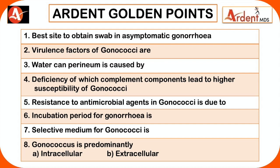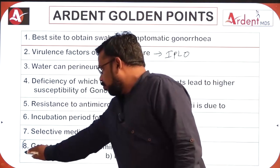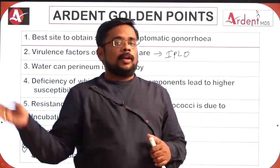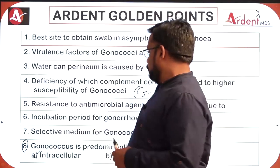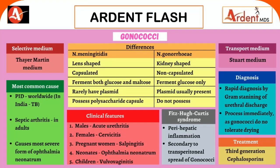Resistance to antimicrobial agents in gonococci is due to both plasmid and chromosomal mediated mechanisms. The incubation period for gonorrhea is two to seven days. The selective medium is Thayer-Martin medium. Gonococci is predominantly an intracellular organism, though also present extracellularly. Meningococci is predominantly extracellular. Gonococci is the most common cause of pelvic inflammatory disease worldwide; in India, tuberculosis is most common. Gonococci also causes septic arthritis.